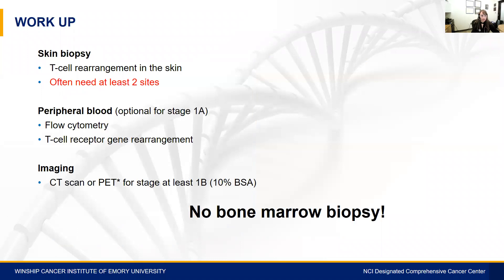How do we work up CTCL? Typically, tissue is the issue, so we start with a skin biopsy. In this disease, we often need two distinct sites. We send for T-cell gene rearrangement and typically send peripheral blood for flow for most patients, which is also sent for T-cell gene rearrangement. We perform imaging with either a CT scan or PET scan for patients with at least 10% body surface area involvement or any abnormalities on exam. Importantly, unlike other forms of lymphoma, bone marrow biopsy is not necessary.